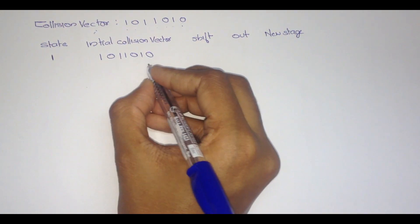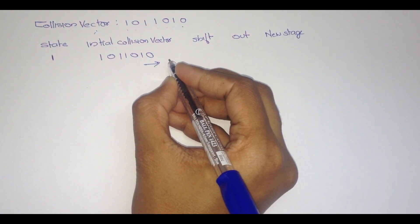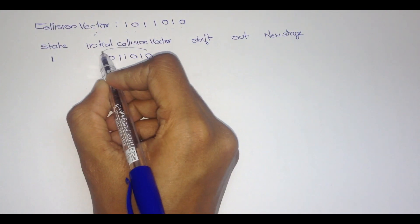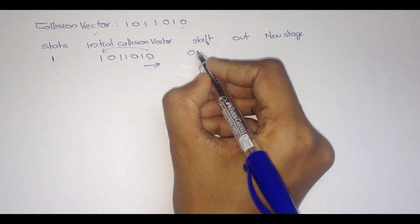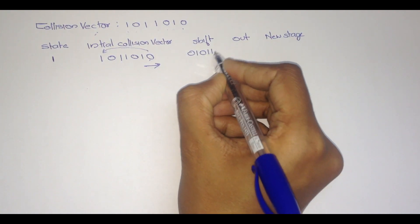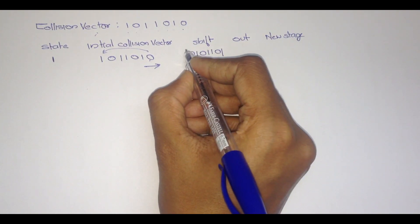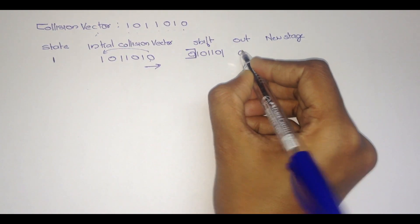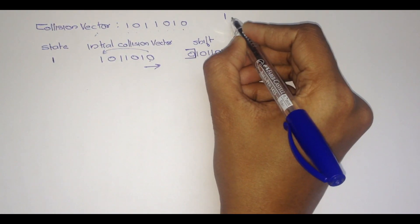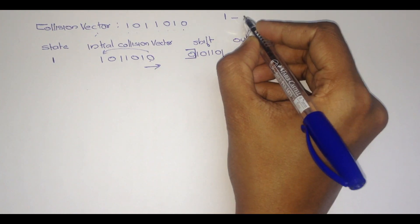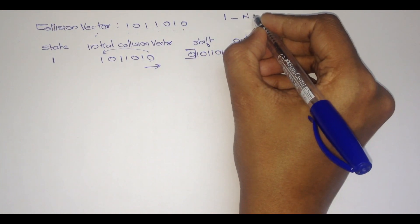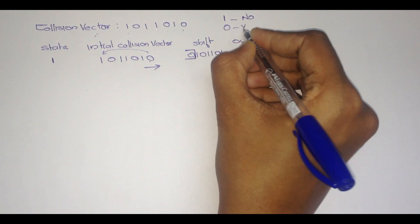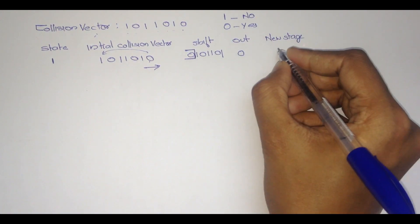Here we have to perform the right shift. When we perform the right shift, this value will come at first: 0, 1, 0, 1, 1, 0, 1. Now we have to out the first value, that is 0. If we are outing a 1, then no new state occurs. But since it is 0, a new state occurs.